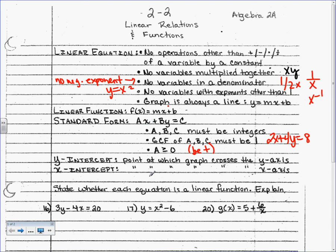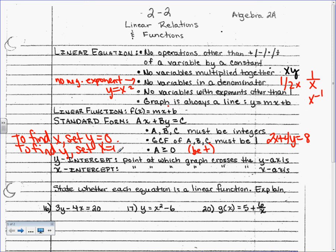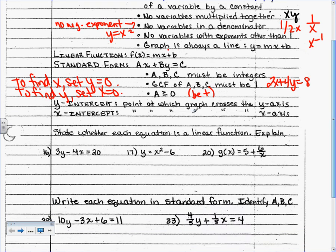Now let's talk about x- and y-intercepts. Your x-intercept is where the graph crosses the x-axis, and your y-intercept is where the graph crosses the y-axis. To find them algebraically: to find x, set y equal to 0; to find y, set x equal to 0. Graphically, it's just where the line crosses each axis.